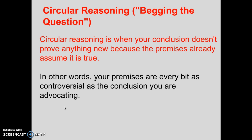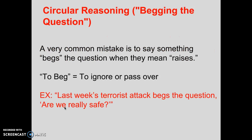Circular reasoning — that's what we're here to talk about today mostly. Circular reasoning, also called begging the question, is when your conclusion doesn't prove anything new because the premises already assume it is true. In other words, your premises, or one of your premises, are every bit as controversial as the conclusion you are advocating. It essentially means that you haven't gone anywhere new — you're spinning your wheels in the mud. One of your premises basically needs to be proved first.